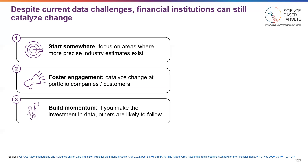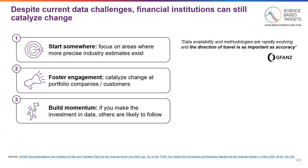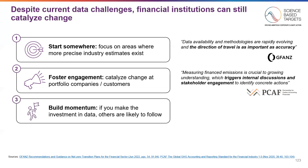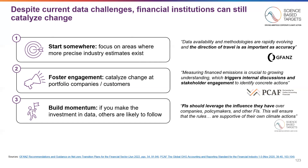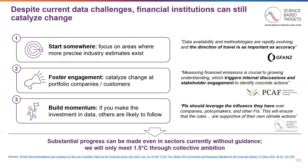This urgency is noted across several other actors in the ecosystem, such as GFANZ, who says that data availability and methodologies are rapidly evolving and the direction of travel is as important as accuracy. PCAF agrees, stating that measuring finance emissions is crucial to growing understanding, which triggers internal discussions and stakeholder engagement to identify concrete actions. Both organizations complement SBTi's influence principle, which anchors on the fact that financial institutions should leverage the influence they have over companies, policymakers, and other financial institutions to ensure that rules are supportive of financial institutions' own climate actions. Substantial progress can be made even in sectors currently without guidance, and it's important to remember that we will only meet 1.5 degrees through our collective ambition.